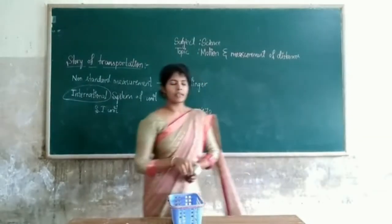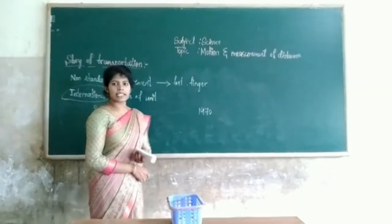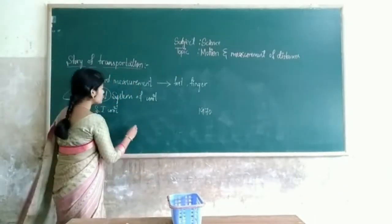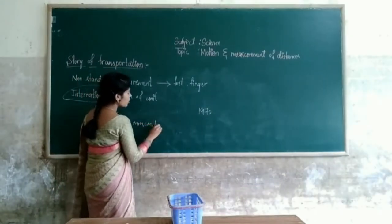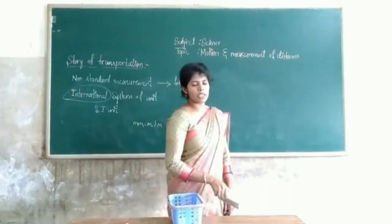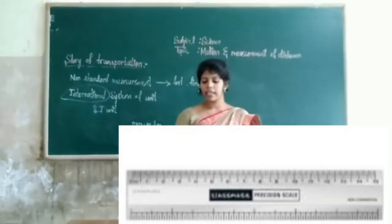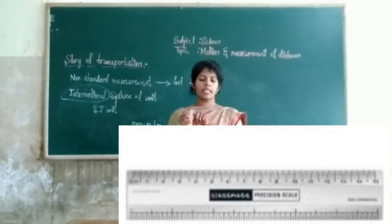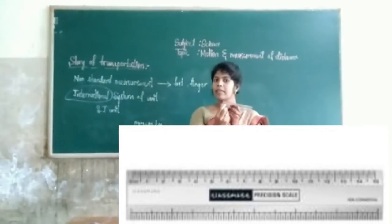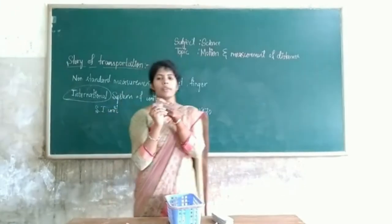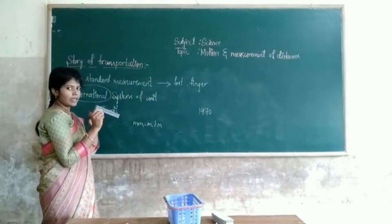What are the SI units? SI units for length include millimeter, centimeter, and kilometer. These are the SI units. You can see these on our geometry scale. This scale contains numbers from 0 to 15 centimeters. How do we measure length? In centimeters.